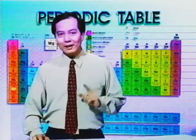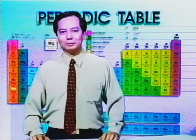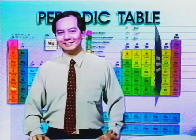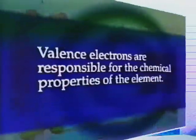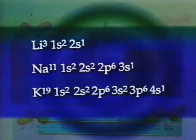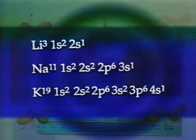Why do elements in the same group have similar chemical characteristics? Valence electrons are responsible for the chemical properties of elements. The group 1A elements have one valence electron each. Therefore, they tend to have similar chemical properties.